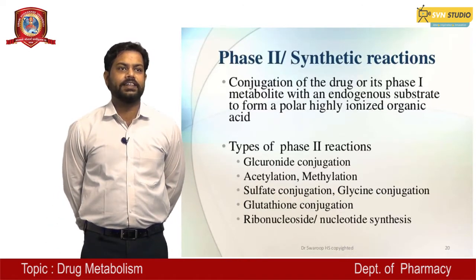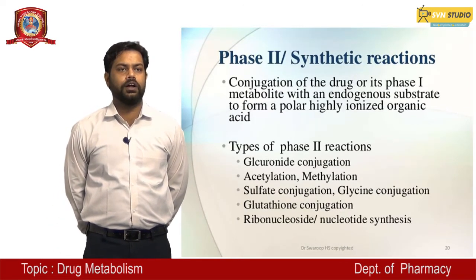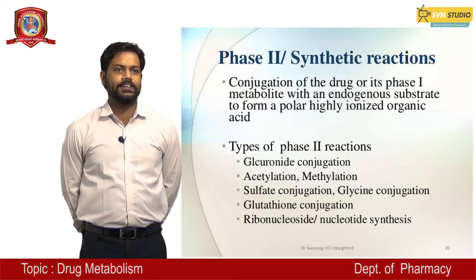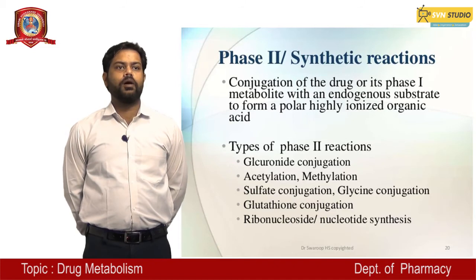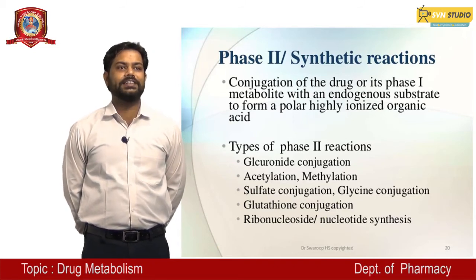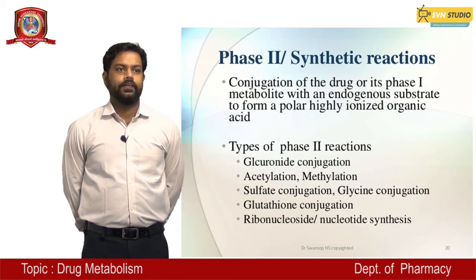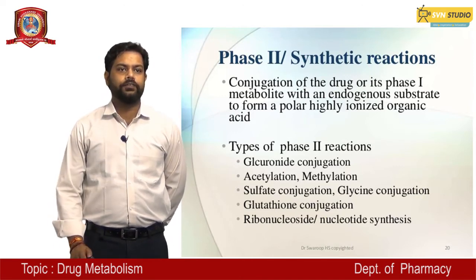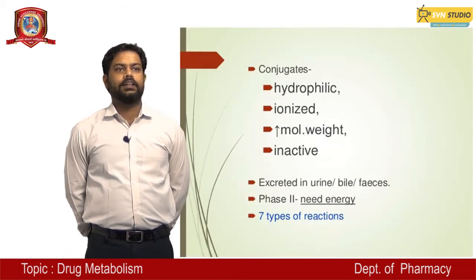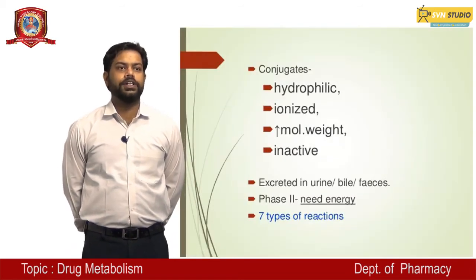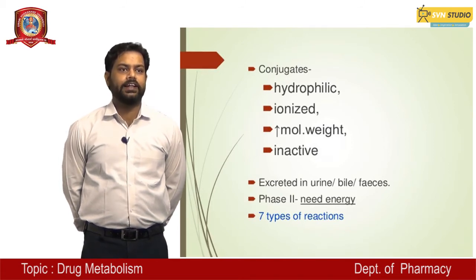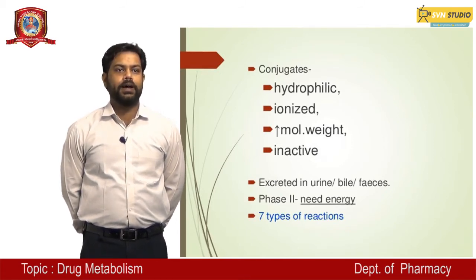Phase 2 — synthetic reaction: conjugation of the drug or its Phase 1 metabolites with an endogenous substrate to form a polar, highly ionized organic acid. Types include glucuronide conjugation, acetylation, methylation, and sulfonate conjugation. Conjugates are hydrophilic, ionized, have increased molecular weight, are inactive, and are excreted through urine, bile, and feces.